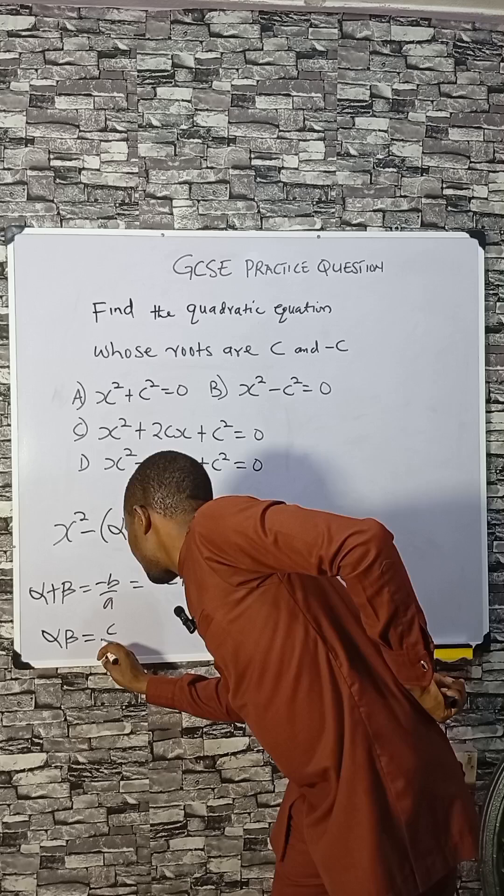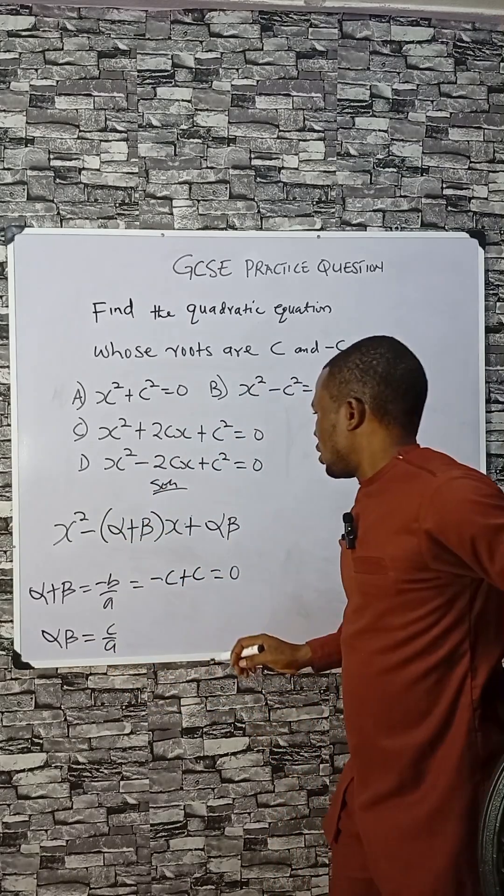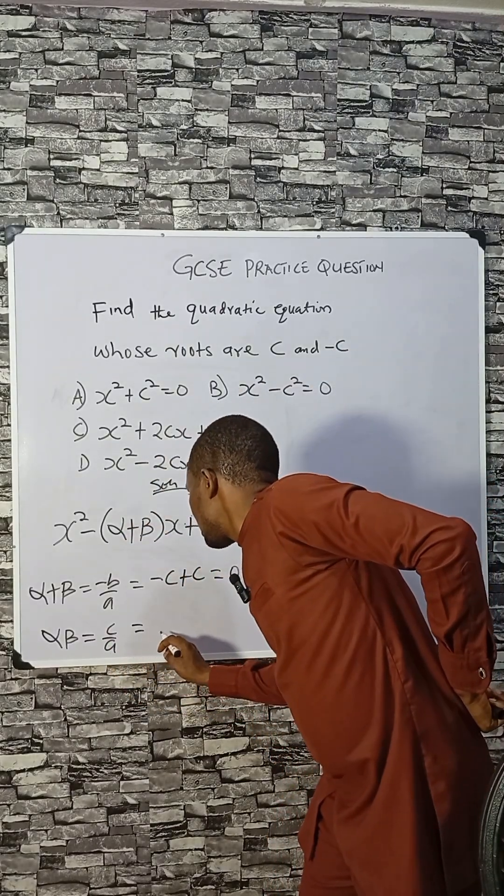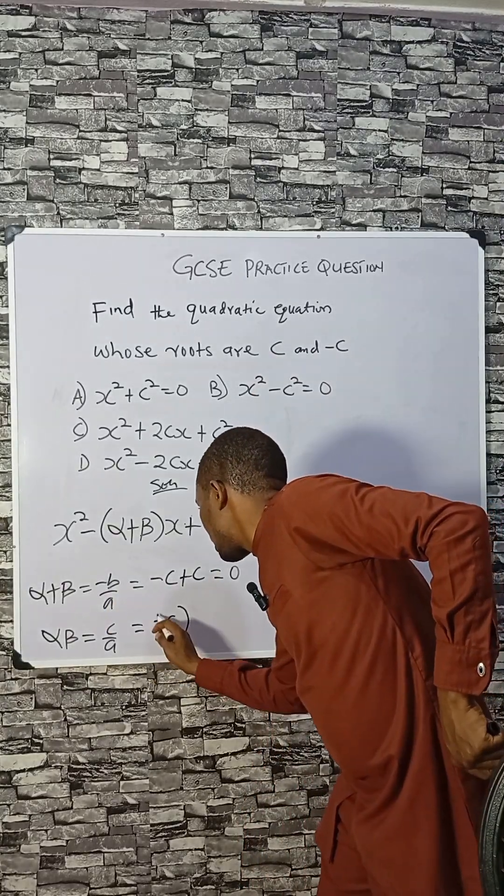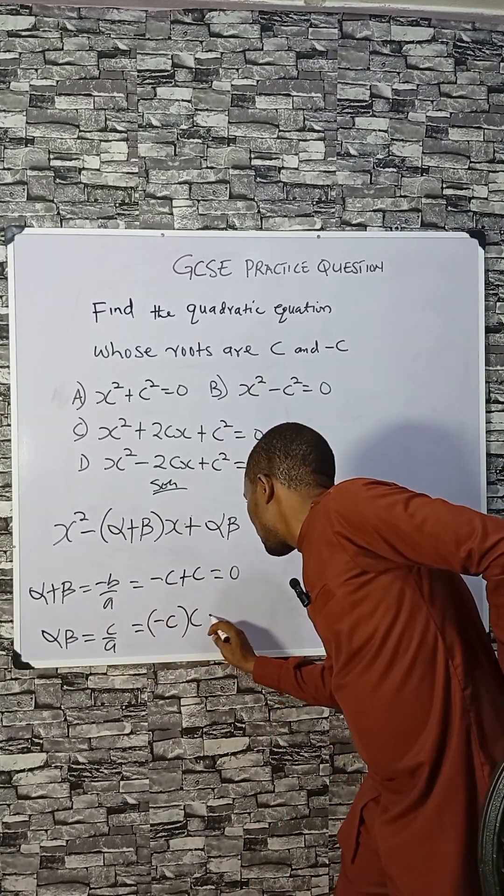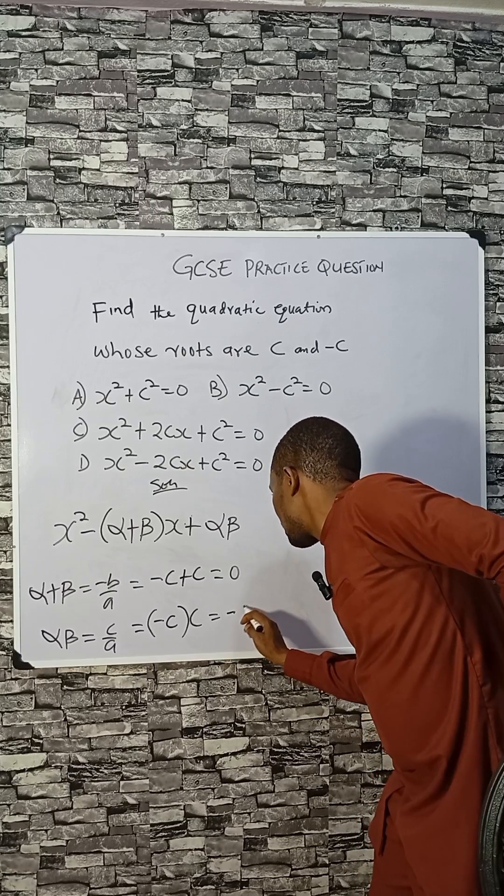be c over a. And that is multiplying the two roots. So minus c times c. What is the answer? Minus c